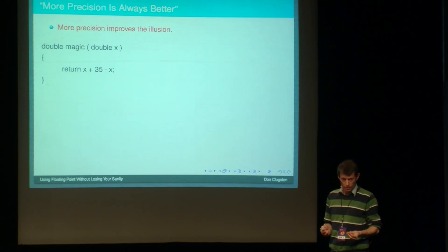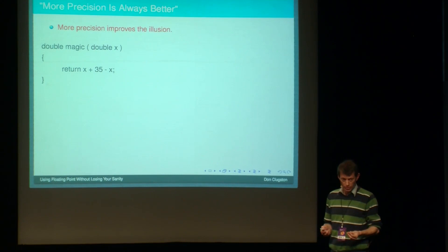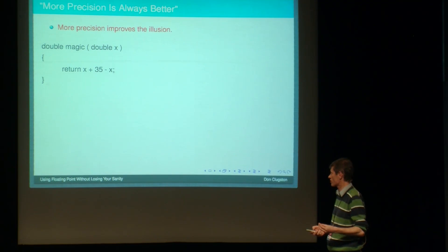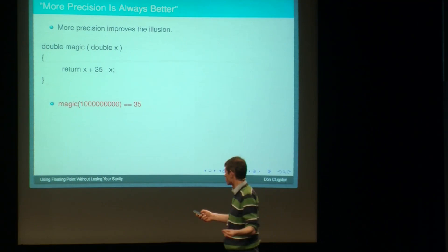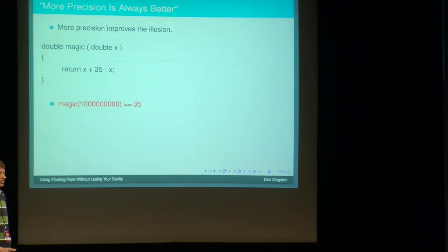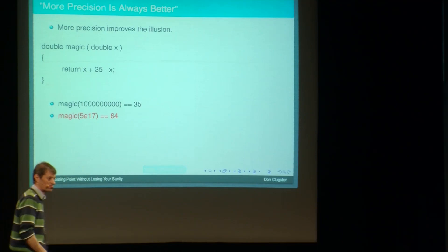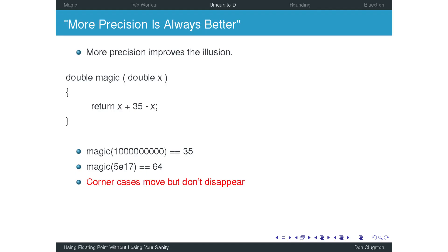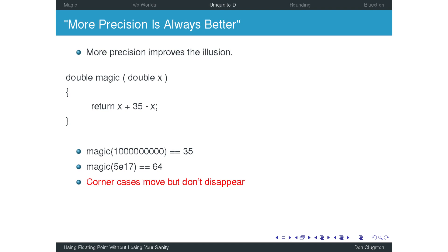Another rule of thumb is that more precision is always better. And it's true that more precision improves the accuracy and it also improves the illusion. So with doubles, magic of a billion is 35. We are still in the mathematical world. 5 by 10 to 17, we're back in the magician's world. It's a trick. So what happens when you use more precision, the corner cases move, but they don't actually disappear.